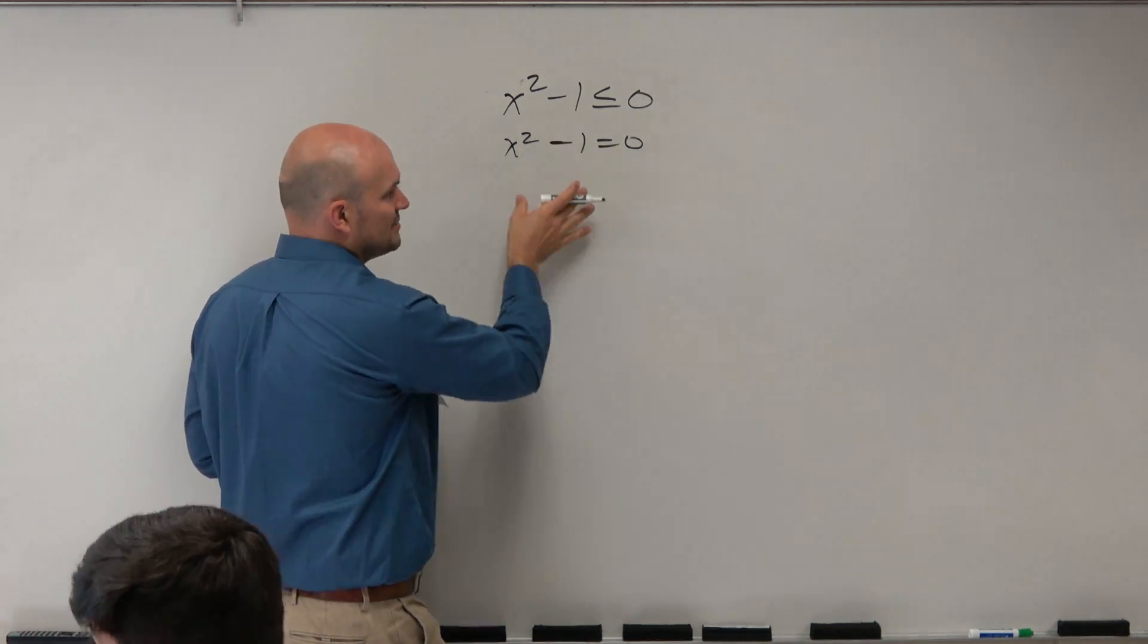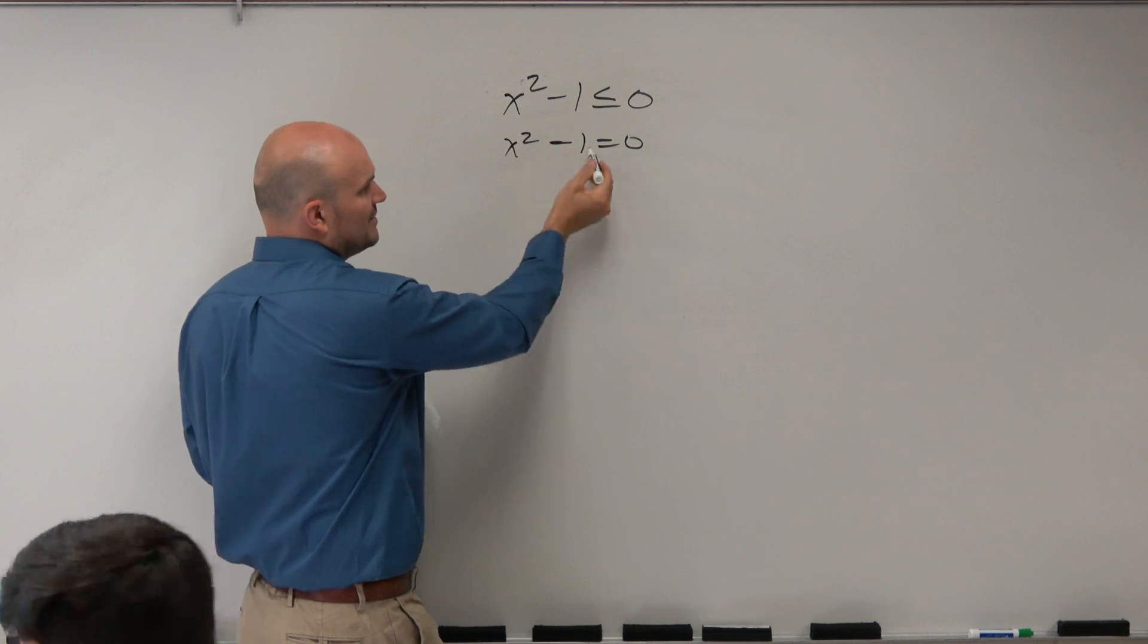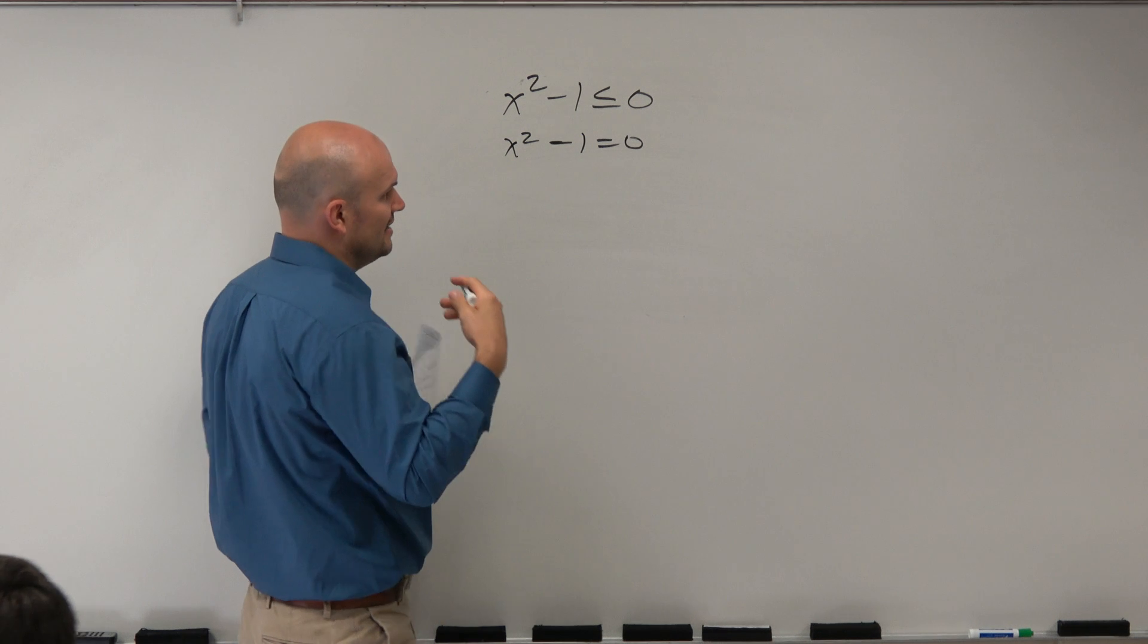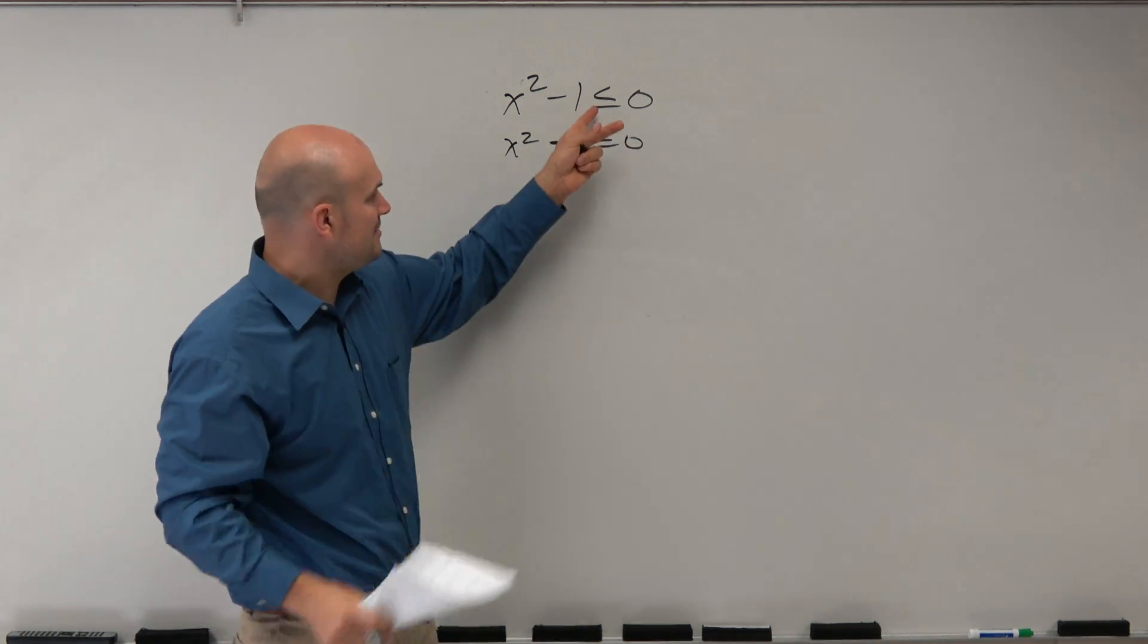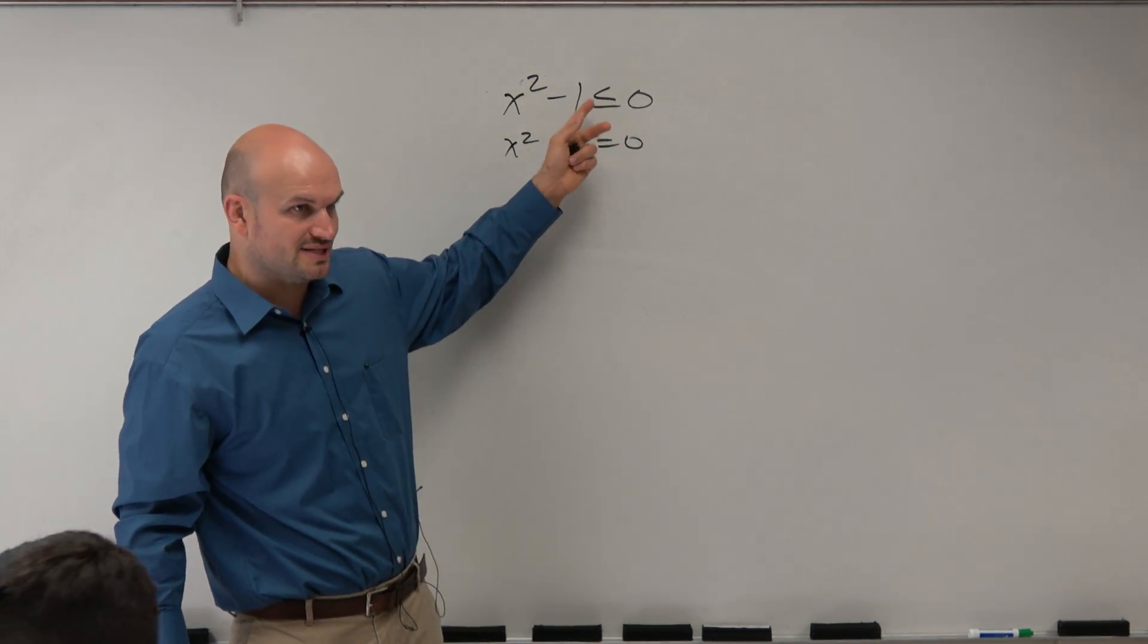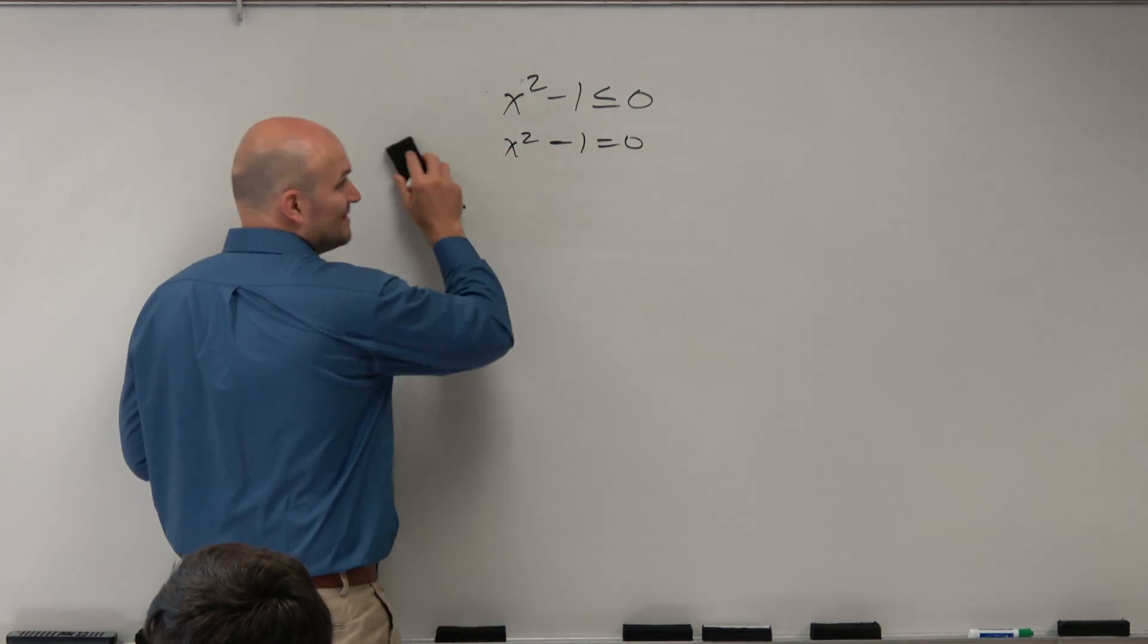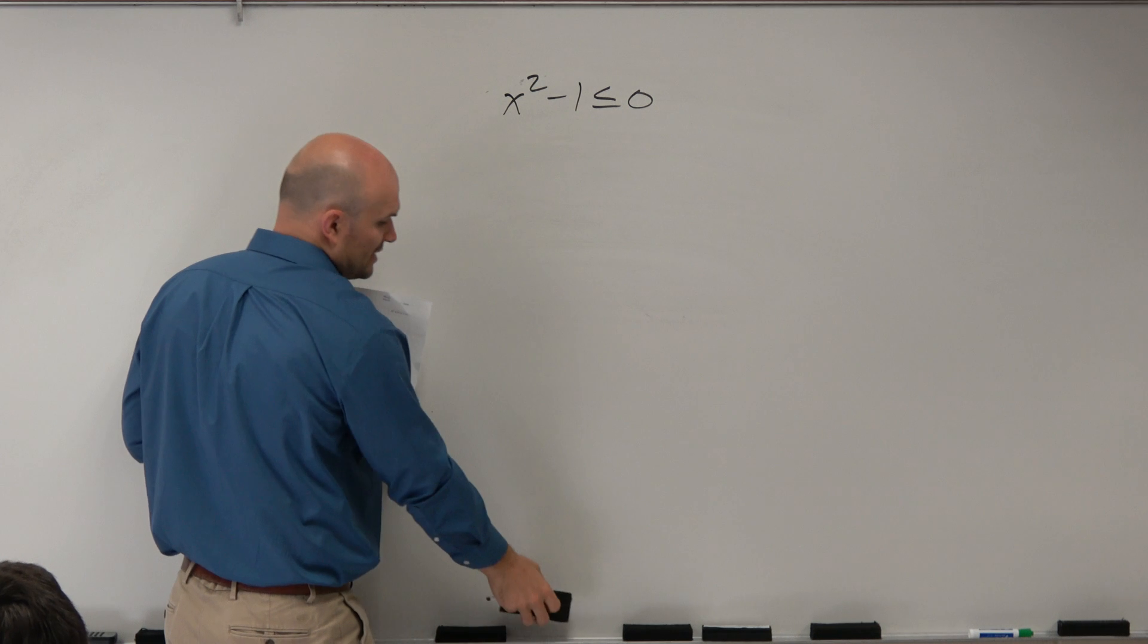So there's a couple different ways to really understand this. But the problem with solving this using an equation is it doesn't really make sense as far as understanding when something's less than or equal to 0. So the better way to really understand this is to understand what that graph looks like.